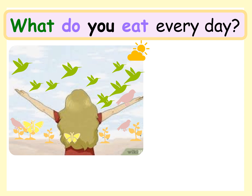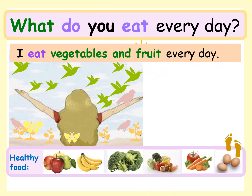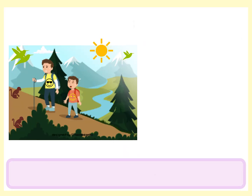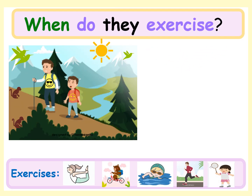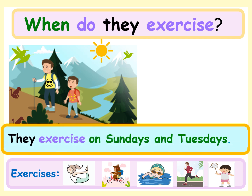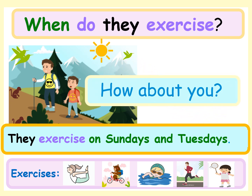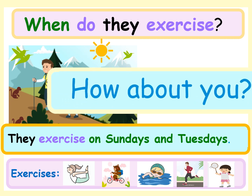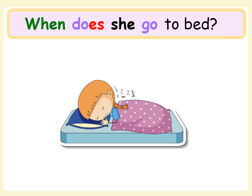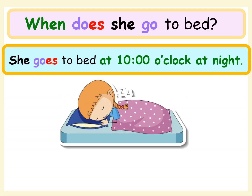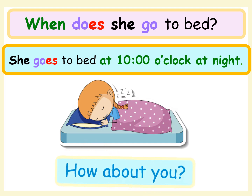What do you eat every day? I eat vegetables and fruits every day. When do they exercise? They exercise on Sundays and Tuesdays. When does she go to bed? She goes to bed at 10 o'clock at night.